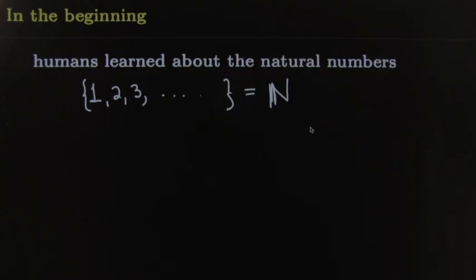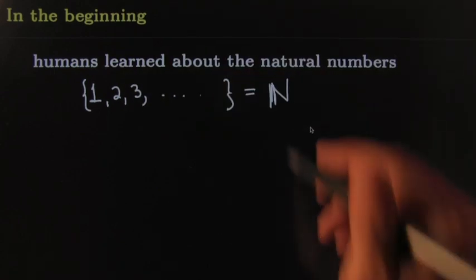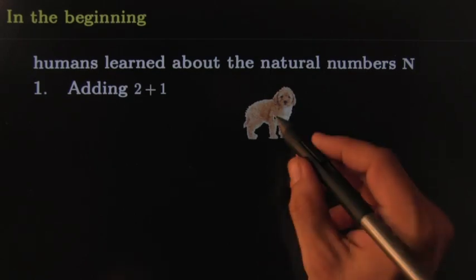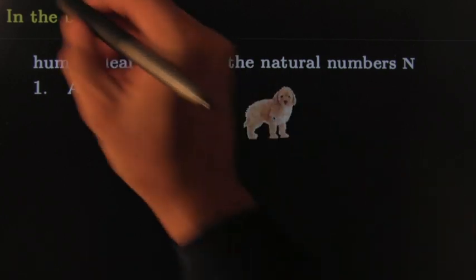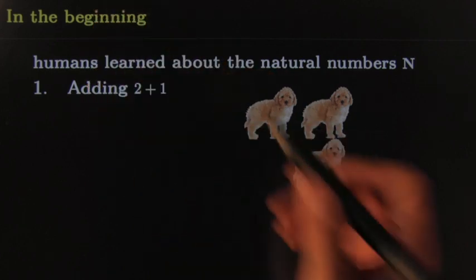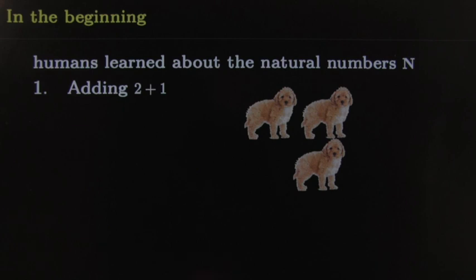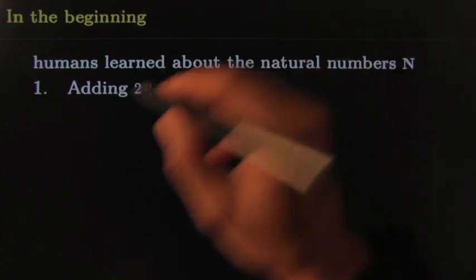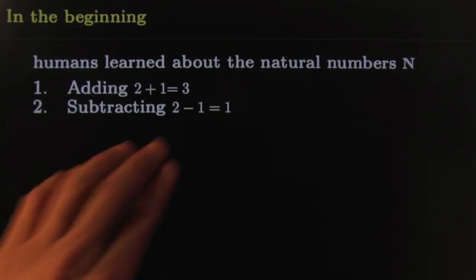Okay, that's what we learned at the beginning. Everything was good — by everything I mean the following: we could add. In the world of natural numbers, adding was not that hard. You could take one dog, and say, 'Oh I've got two dogs — wait, I've got one more dog.' You could say, 'How much is it if I had one dog plus two dogs?' Well of course that's going to be three dogs, and life would be good. Adding was not that hard.